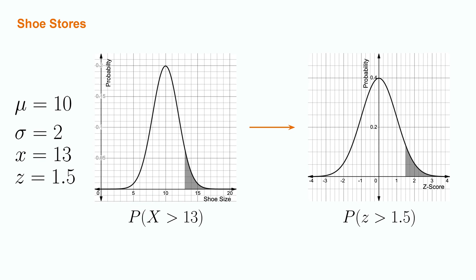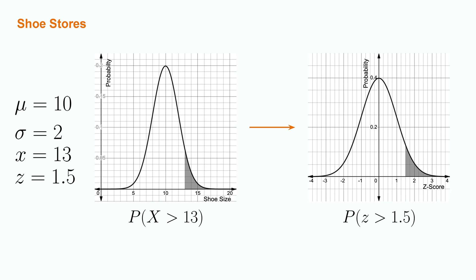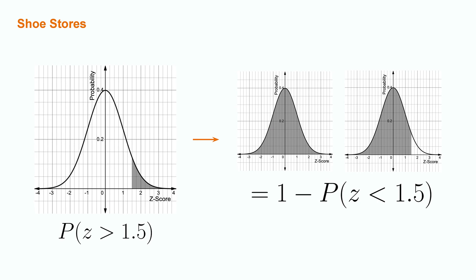Coming back to our original visual, our z-score tells us that we can translate our calculation for the probability of x being greater than 13 on a normal distribution of mean 10 and sigma 2, the probability of the z-score being greater than 1.5 on a standard normal distribution. Finally, in order to get this probability out of a z-table, we must make use of our first cumulative probability rule, and equate the probability of z being greater than 1.5 as 1 minus the probability of z being less than 1.5.